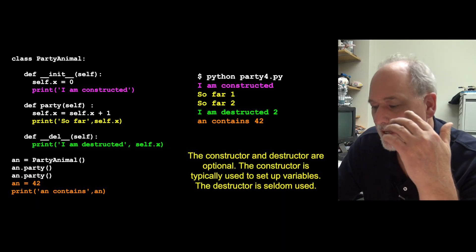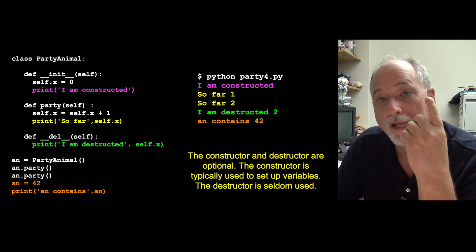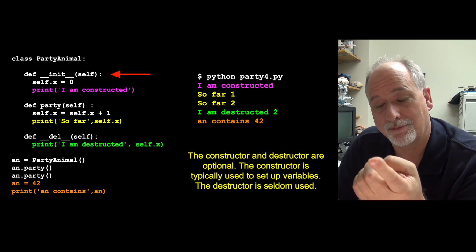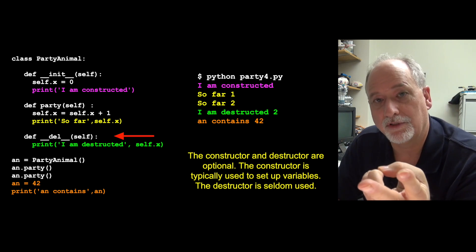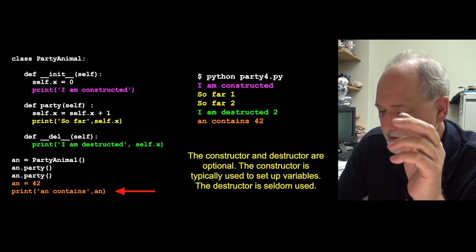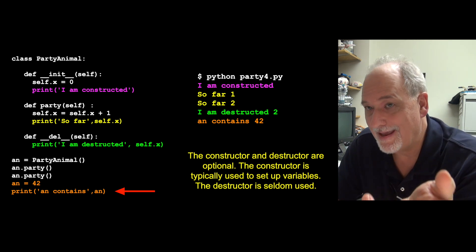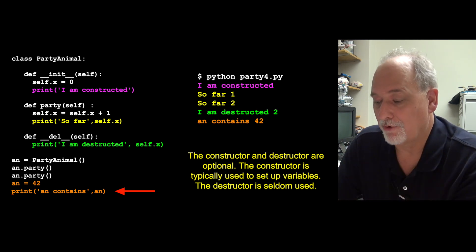So we are allowed as the builder of these objects to add these little chunks of code that says, I want to be involved at the moment this object is created. And I want to be involved at the moment that this object is destroyed. Now, in this last line, an is no longer a party animal. An is now an integer. It's got a 42 in it.